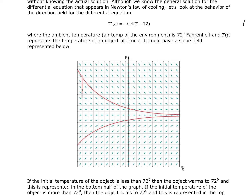If you start out with an object that has a temperature higher than 72 degrees, you can see that eventually it will cool down to 72 degrees. And if you have an object that is cooler than 72 degrees, then as it warms up, it'll eventually make it up to 72 degrees.